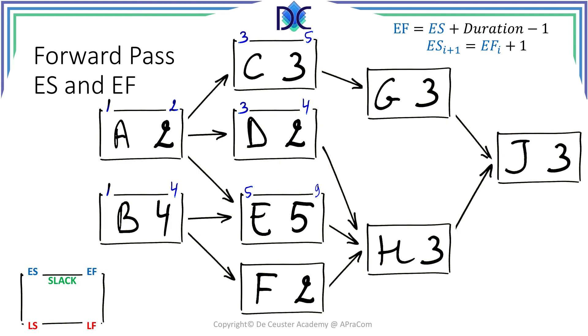For F it's a little bit easier. There is only one predecessor so F can start on April the fifth. F takes two periods so F will finish on April the sixth. Activity G, the same thing, 5 plus 1 is 6 and the early finish time is 6 plus 3 minus 1 which is April 8.